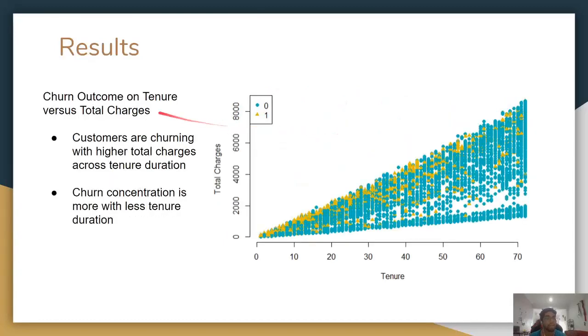Next, the churn outcome on tenure versus total charges. Just how we had monthly charges, this one is total charges. What we see is that customers are churning with a higher total charges across tenure duration. All of them are concentrated on the higher, this top part, with total charges at each tenure duration compared to this lower part. We see that it's currently happening, and the churn concentration is more with less tenure duration. Less tenure duration, we have more concentration of churn. It's more prevalent in this earlier tenure duration.